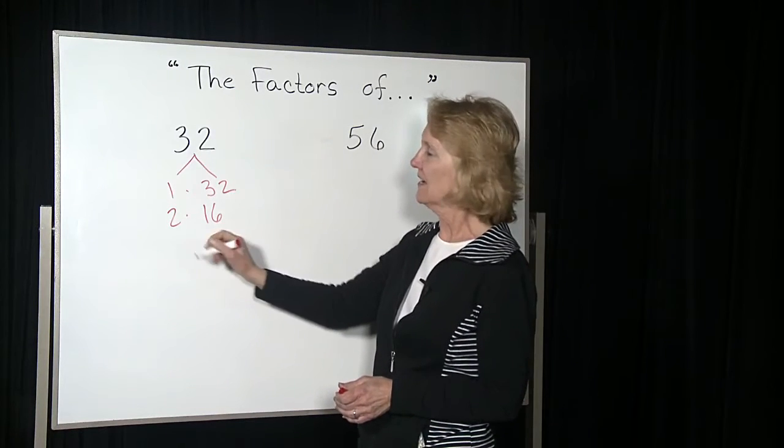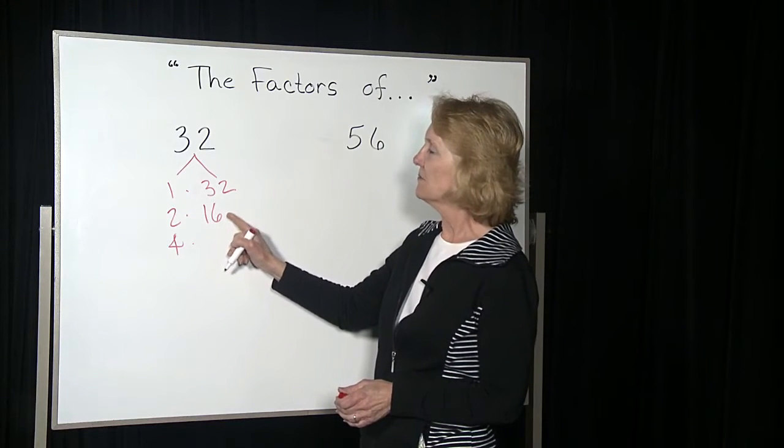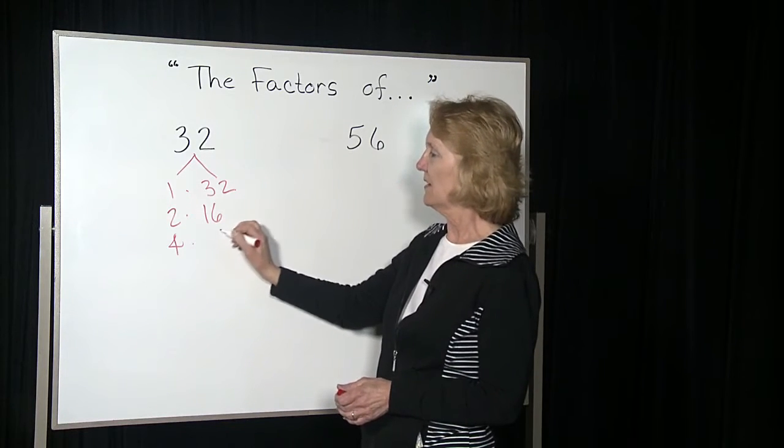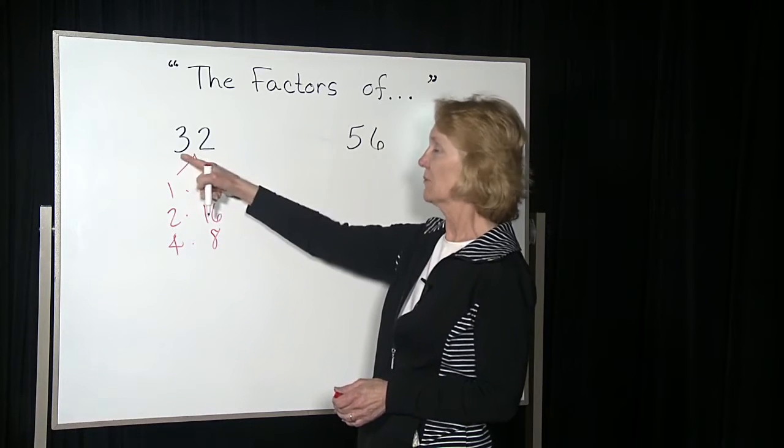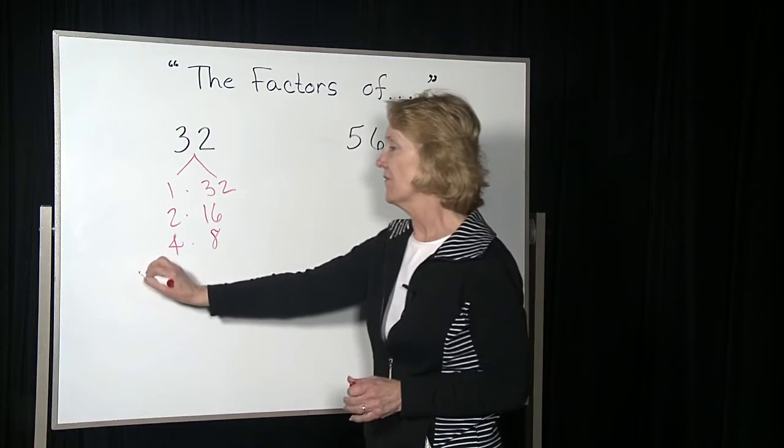That's still even, so I can cut it in half. So I'm going to double this to 4, 4 times, I doubled this, so cut that one in half, and I get 32, which we know 4 times 8 is 32. Okay, and that's it. That's your factors.